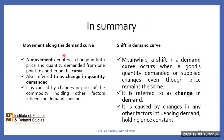In summary, movement along the demand curve denotes a change in both price and quantity demanded from one point to the other on the demand curve. We also refer to movement along the demand curve as change in quantity demanded. This movement is caused by changes in the price of the commodity, holding other factors influencing demand constant.